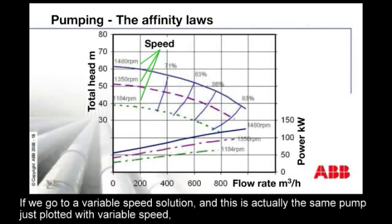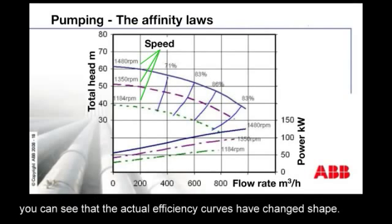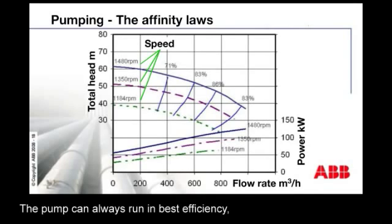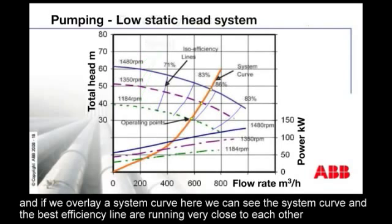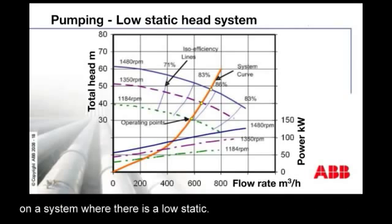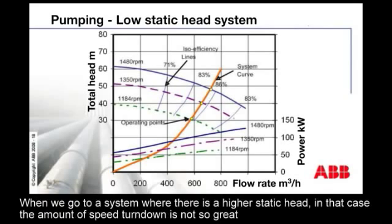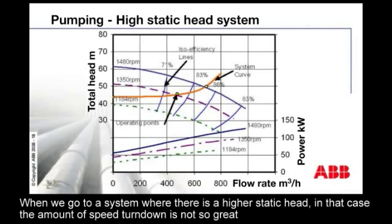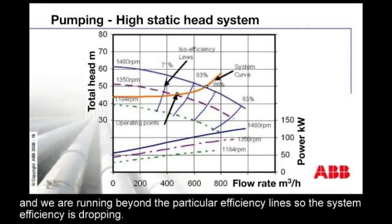If we go to a variable speed solution — and this is actually the same pump plotted with variable speed — you can see that the efficiency curves have changed shape, and the pump can always run at best efficiency. If we overlay a system curve, we can see the system curve and the best efficiency line running very close to each other on a system with a low static head. When we go to a system with a higher static head, the amount of speed turn-down is not so great, and we are running beyond the particular efficiency lines, so the system efficiency is dropping.